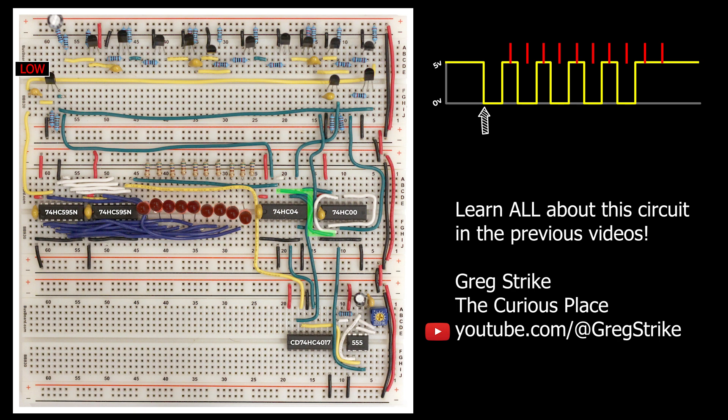So back up here, the SR latch signal sets the SR latch. This activates the start bit detection inhibitor, preventing more start bits, and it also causes the reset pin of the 555 to go high, which starts our clock.